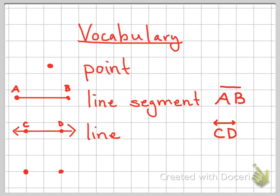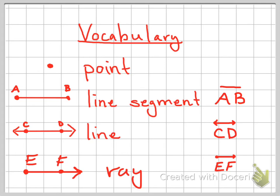Our first video was a vocabulary lesson — points, line segments, lines, and rays. So I'm going to show how we name a ray. If this is points E and F, then I am going to label that E, F — and it will have a point on one end and an arrow on the other.